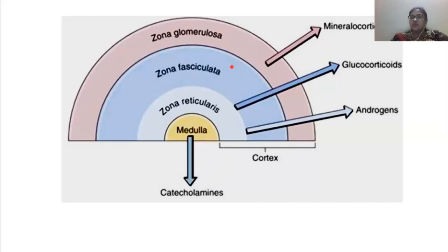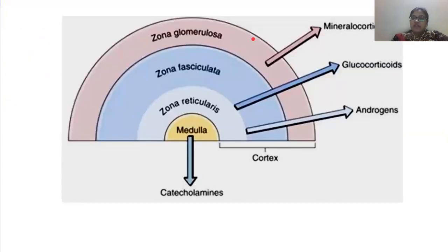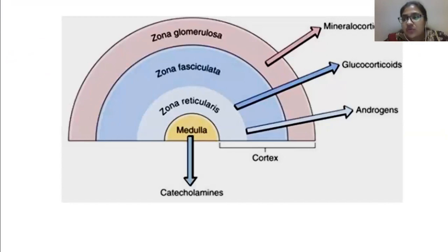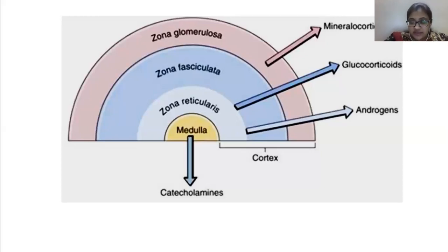Since the adrenal gland is already producing glucocorticoids, they have major functions in the body. Glucocorticoids actually suppress inflammation and suppress the immune system. These are their primary actions.